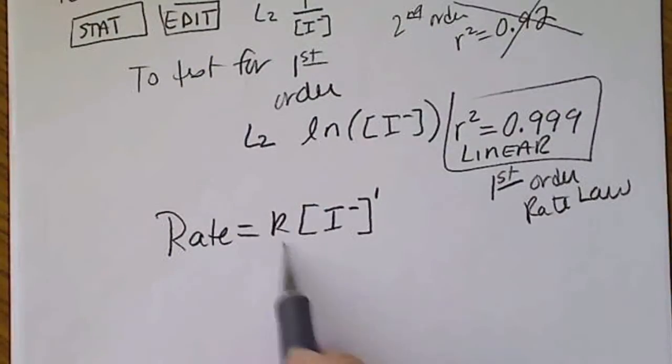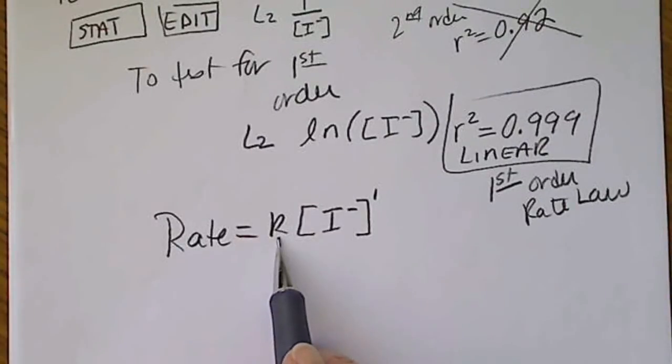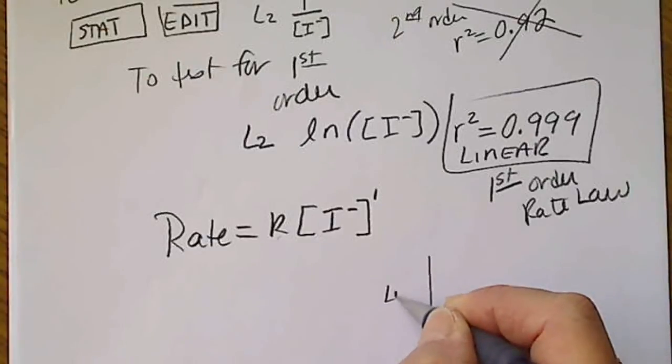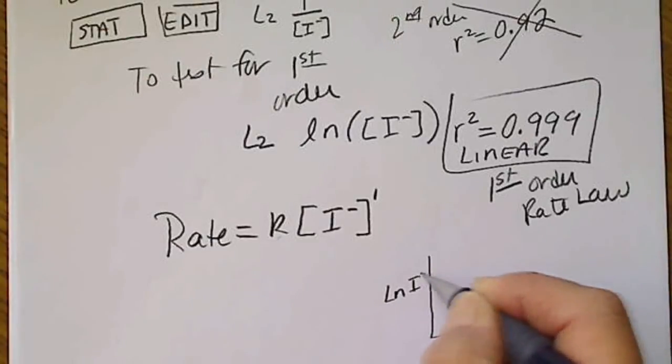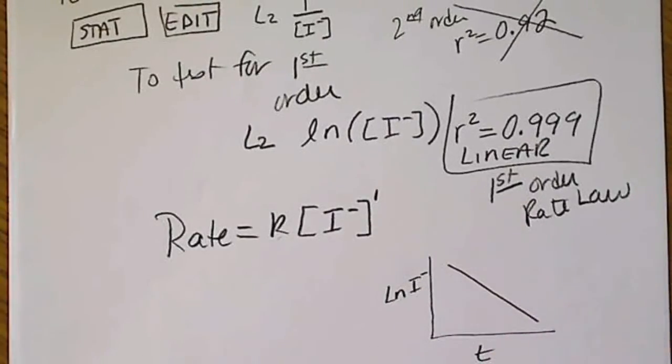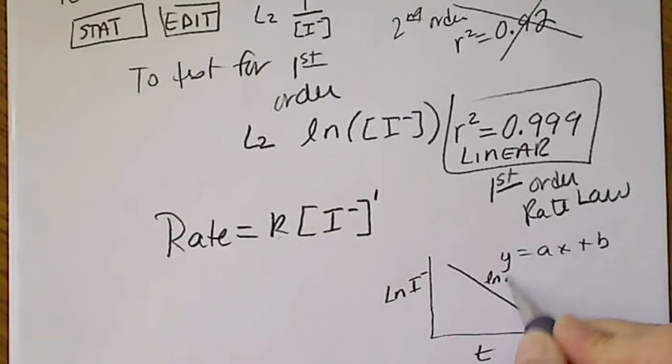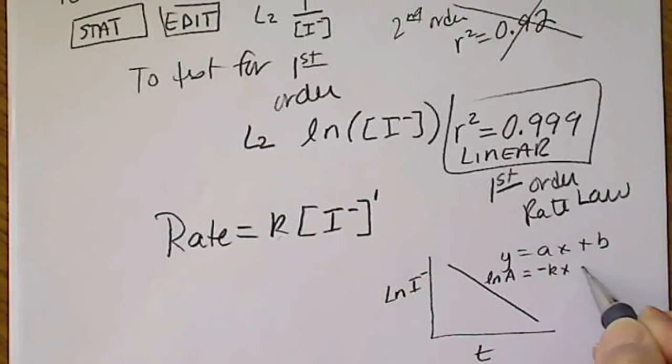Now to obtain the rate constant, because when we graph this, if we graph the natural log of [I-] versus time, we're going to get a linear equation with a negative slope. And so this fits the equation y equals ax plus b.